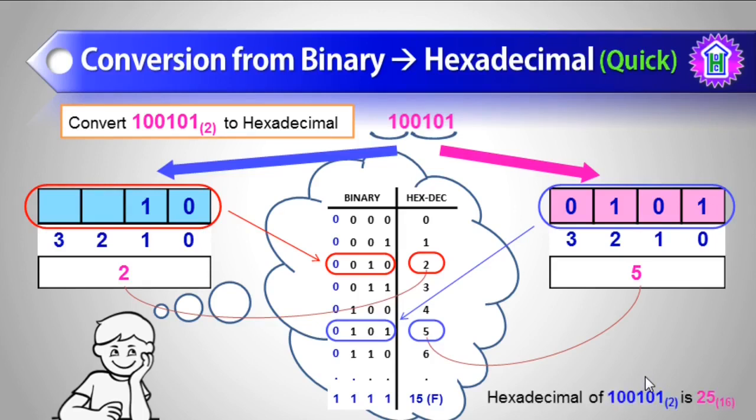So hexadecimal of 100101 is 25. So this is the quicker method. For this you have to learn this table.